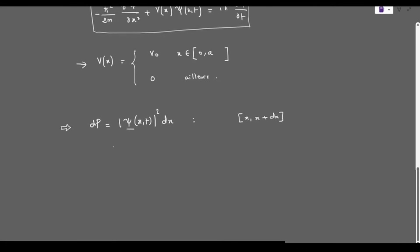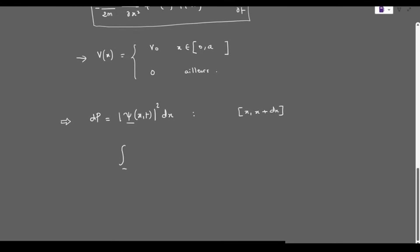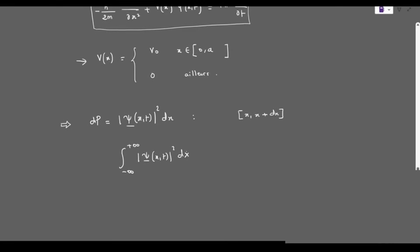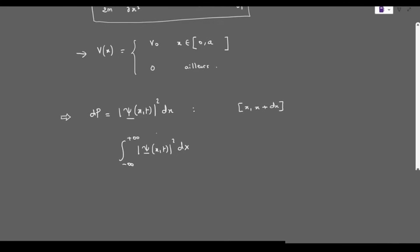The probability is normalizable, meaning that the integral from negative infinity to positive infinity of dP equals 1. The wave function is homogeneous to a length to the power of minus 1/2, therefore ψ is homogeneous to 1 over the square root of length.